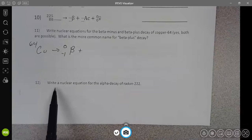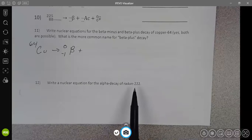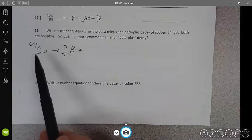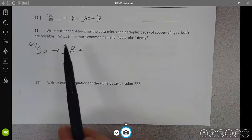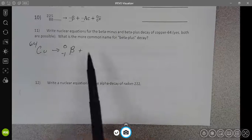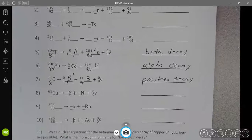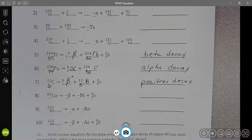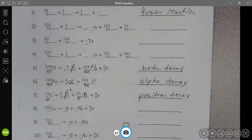You also want to be able to draw this for a beta plus decay. And then you also want to be able to write a decay for radon 222. So given a parent and a type of decay, you should be able to write the reaction. You should also be able to fill in the blanks on a reaction and identify the type of reaction.